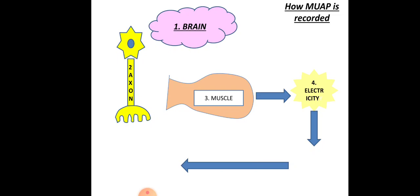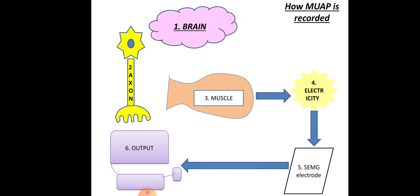Once the MUAP is developed, it is sensed by the surface electrode of the EMG — whether a surface electrode, needle electrode, or fine wire indwelling electrode. Those electrodes are placed on the site which senses the electrical signal produced by the muscle. After sensing, it is sent to the output system, such as a computer or audio-visual aid. This brings us to the recording phases of EMG.